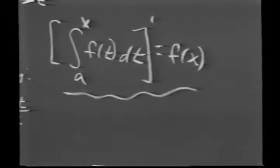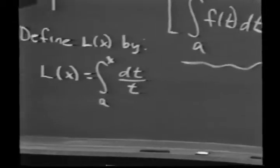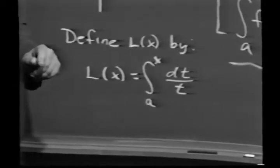In other words, I can now view capital L of x as being an area under the curve y equals 1 over t.